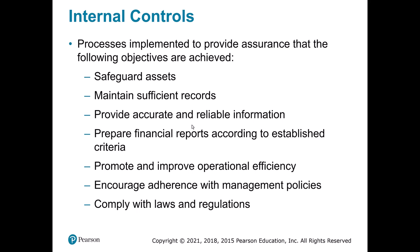We call this whole category internal controls — different processes put in place to make sure the right things happen. One example is safeguarding assets, like making sure clerks count the cash in a till at the start of their shift and reconcile it with what's supposed to be there. We also need to have sufficient records — if we sell something, buy something, or hire someone, we should know all that information. And we need to make sure the data is correct.